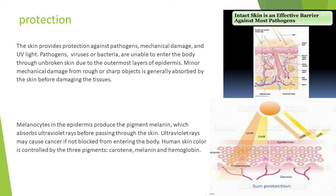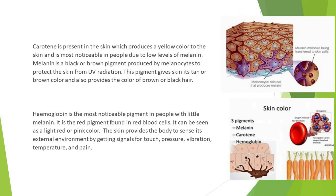Human skin color is controlled by three pigments: keratin, melanin, and hemoglobin. Keratin is present in the skin, producing a yellow color that is most noticeable in people with low levels of melanin. Melanin is a black or brown pigment produced by melanocytes to protect the skin from UV radiation. This pigment gives skin its tan or brown color and also provides the color of brown or black hair.